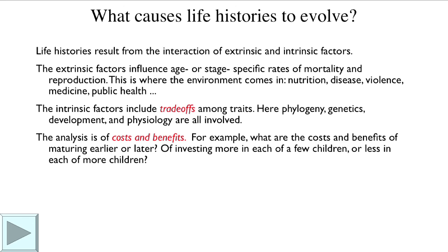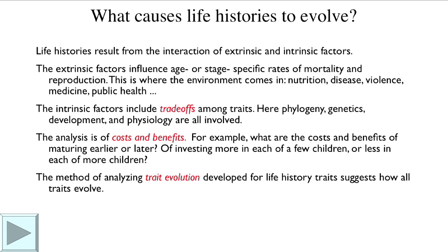The method of analysis is basically a cost-benefit analysis. For example, what are the costs and benefits of maturing earlier versus later? What are the costs and benefits of investing more in each of a few children versus less in each of more children? What would the ideal balance be? The method developed for analyzing trait evolution in life histories can suggest how all phenotypic traits have been designed by natural selection.